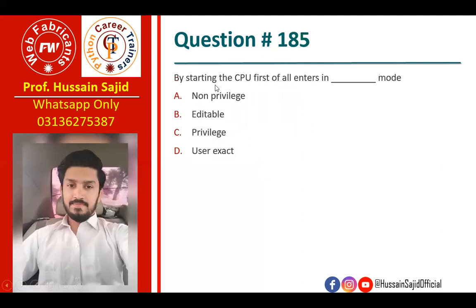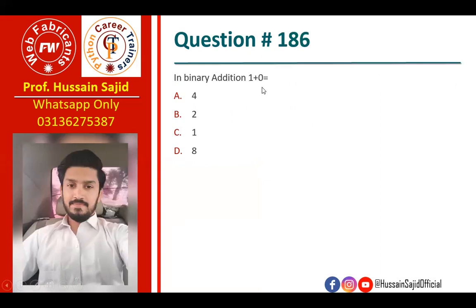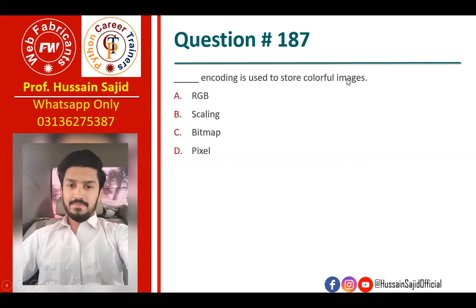When starting the CPU, it first enters privilege mode. Regarding binary addition: one plus zero equals one. RGB encoding — red, green, and blue — is used for color images.